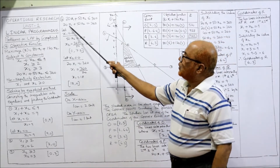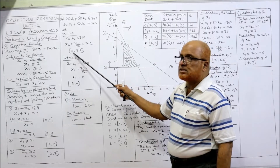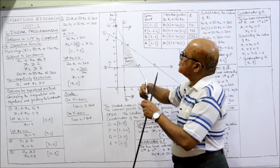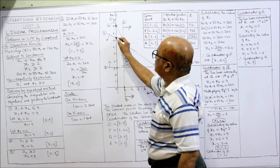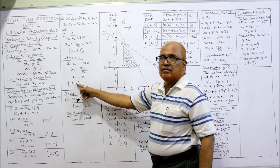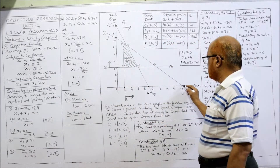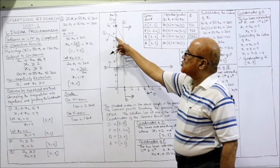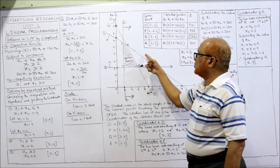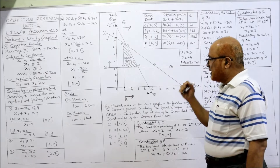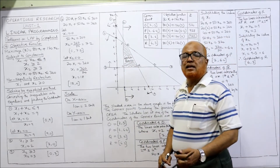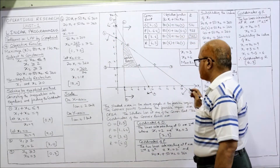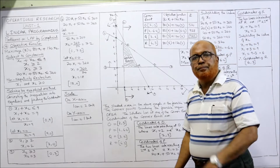Fourth and last: 20x1 + 50x2 ≤ 360. When x1 = 0, x2 = 7.2 — mark here. When x2 = 0, x1 = 18 — mark here. Join these two points, extend, and write as line 4. It is less than or equal to type, so the arrow is downward, towards the origin. All four lines are now drawn.